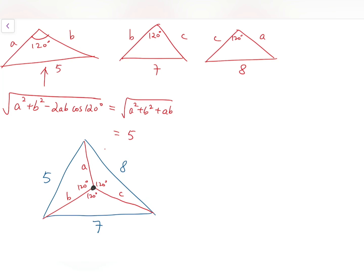So, on one hand, I have half of ab sin 120 degrees, plus half bc sin 120 degrees, plus half ac sin 120 degrees. That's the area, and on the other hand, I'm going to use the lengths 5, 7, and 8, and bring in Heron's formula.